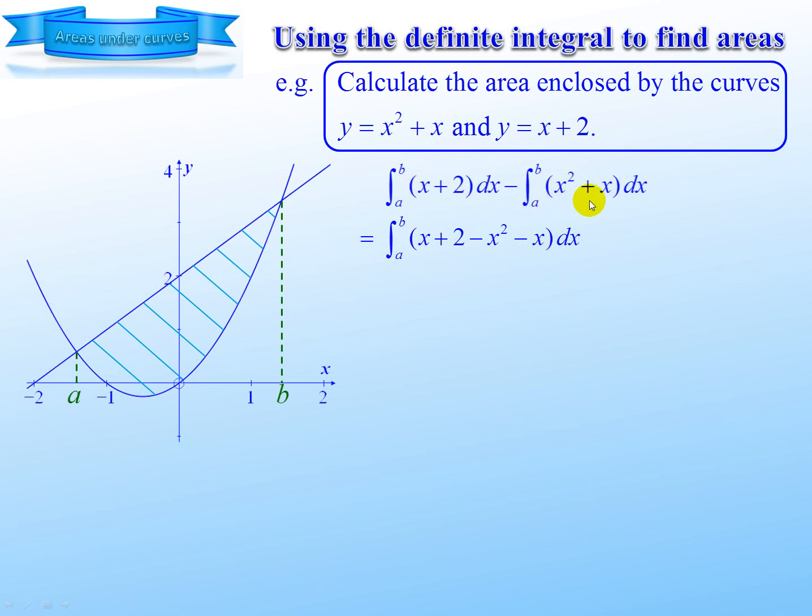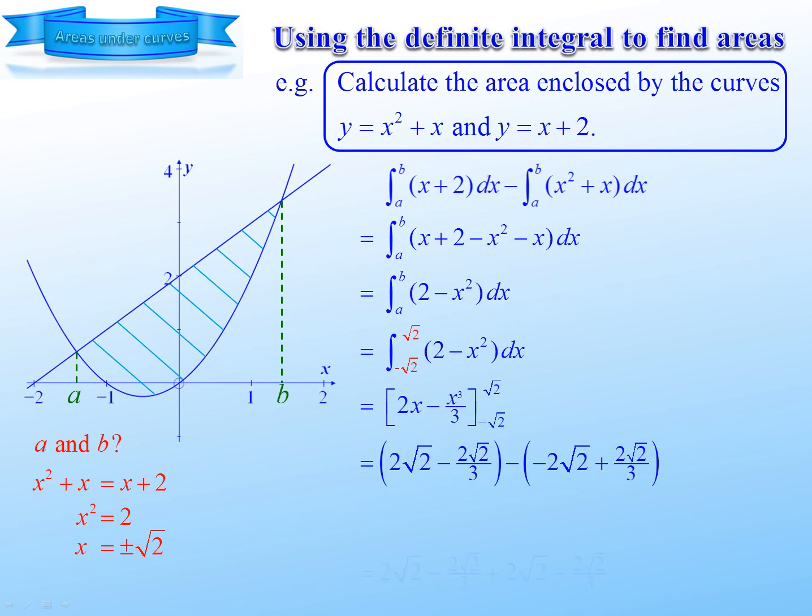I can now combine those two into a single integral because they're both from a to b. And now I can simplify. Now I need to find the values of a and b. To do that, we solve simultaneously. We can equate x squared plus x to x plus 2. So x is plus or minus the square root of 2, which means negative square root of 2, square root of 2. Now we have a standard integral with substitution. Substitute root 2, subtract, substitute negative root 2. 8 root 2 over 3.